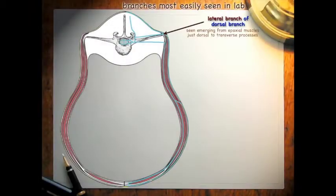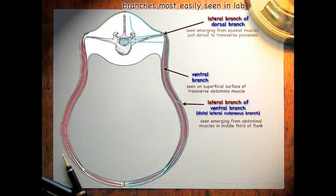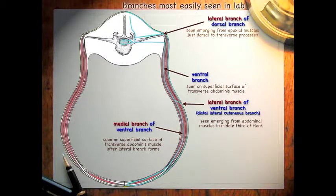Back to this image: going to the ventral branch, we can see this on the superficial surface of the transverse abdominus muscle, and as it courses distally we will see the lateral branch of the ventral branch coming off. We may see it emerging from the abdominal muscles about in the middle third of the flank. That medial branch of the ventral branch will continue on the superficial surface of the transverse abdominus muscle after it gives off the lateral branch.